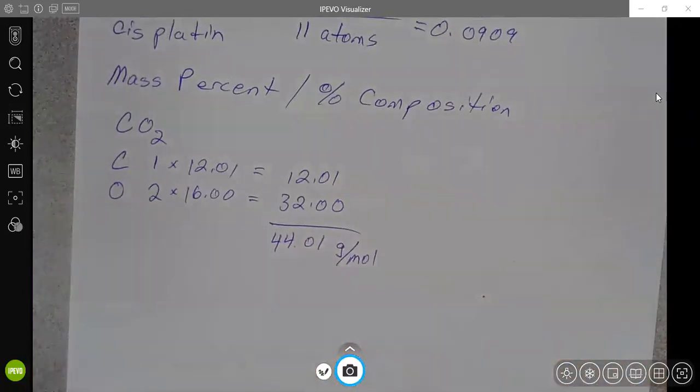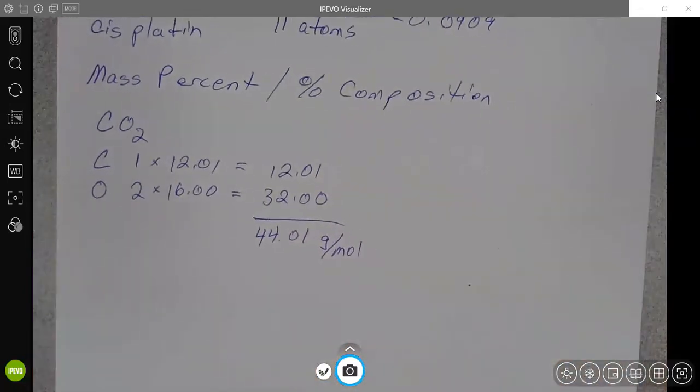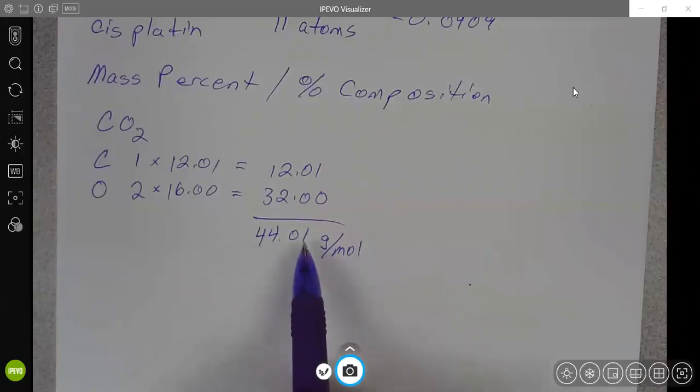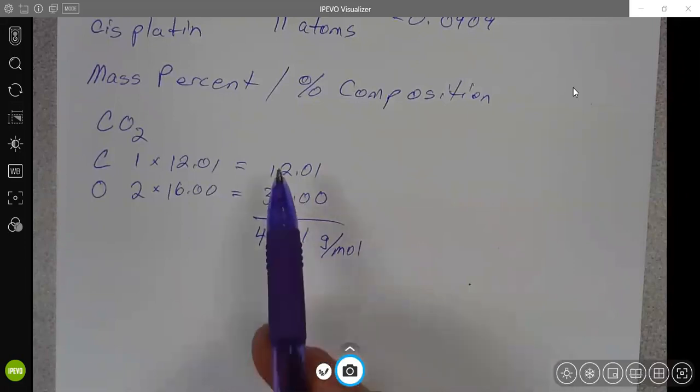We could say grams per mole. We could say AMU per molecule.